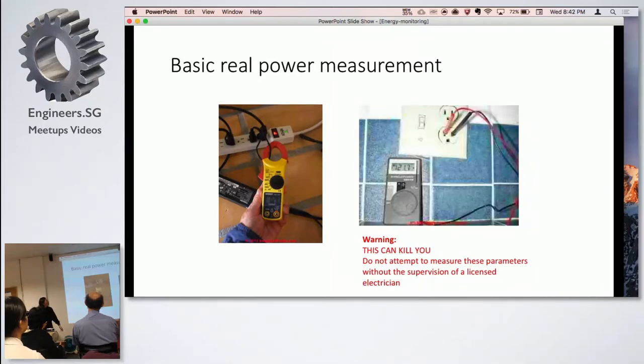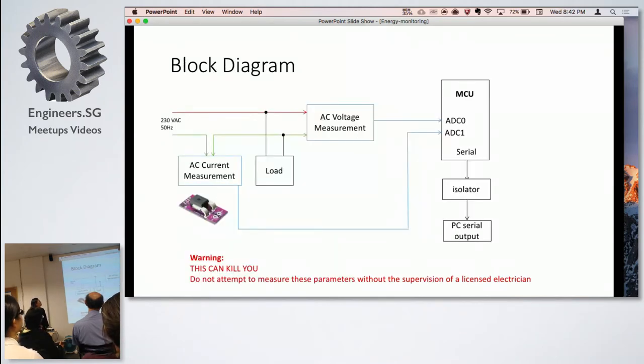This is the block diagram. Basically you have the line 230 VAC at 50 Hertz. The circuit has two circuits for the AC voltage measurement and the AC current measurement. For this one we use the invasive hall IC sensor, but you can see from there that there is an isolator. It is very important because this one is connected to the mains, so without this you'll possibly be dead if you touch anything on the board. This is your load in parallel.